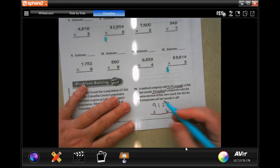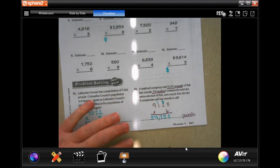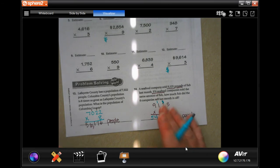So 6 times 5, 30, carry your 3. 6 times 2 is 12, plus 3 is 15, carry our 1. 6 times 1 is 1, plus 1 is 7, and 6 times 9 is 54. So 54,750 pounds.